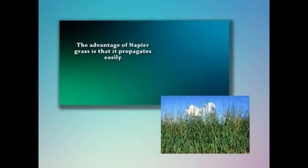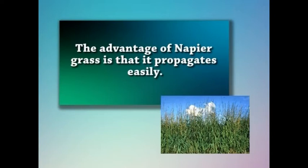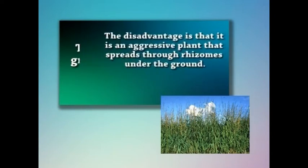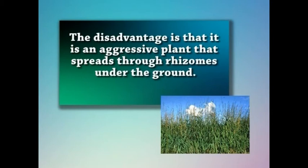Napier grass is also considered as a soil-restoring crop as the grass leaves the soil richer in organic matter. This grass can better be used in silage-making rather than hay-making as the grass is too coarse. The advantage of Napier grass is that it propagates easily. The disadvantage is that it is an aggressive plant that spreads through rhizomes under the ground. If it is not controlled, it can invade crop fields and become a weed.